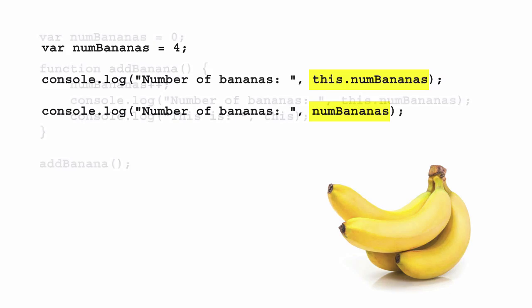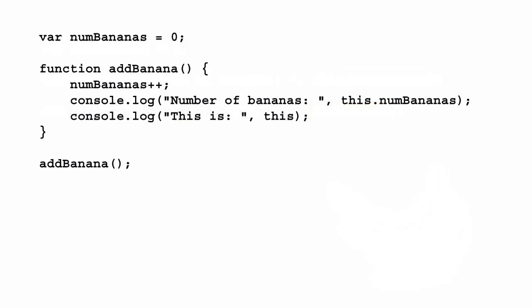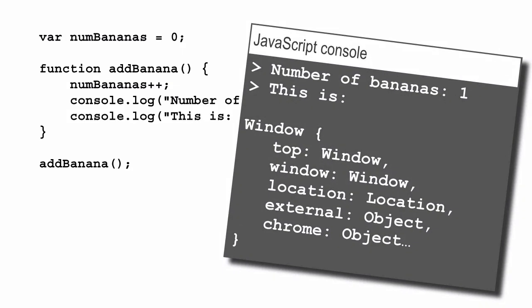Now let's see what happens when we move the code inside a function. You might think that `this` would have a different value inside a function, but when we run the code, we see that the value of `this` inside the function `addBanana` is still the `window` object. And again, we can either use `this.numBananas` or just `numBananas` to refer to the variable.